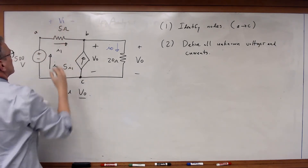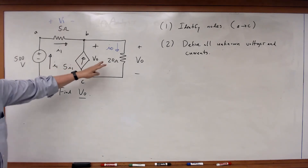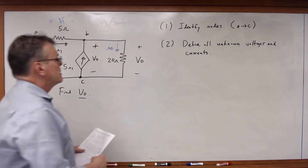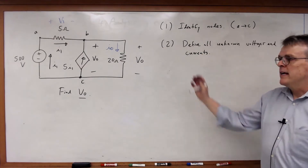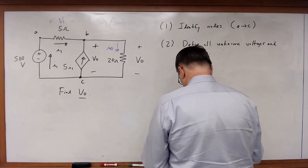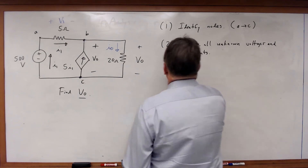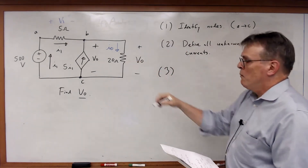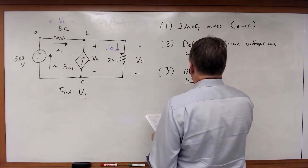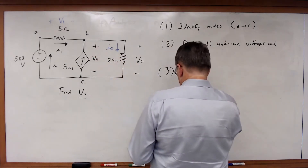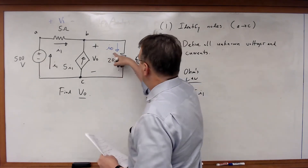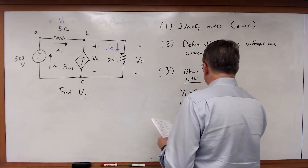I also need V1 for the 5-ohm resistor up there. Now every resistor and every source has a voltage and current associated with it — all unknowns are defined. Ohm's law gives us V1 equals 5I1, and V_O equals 20I0.